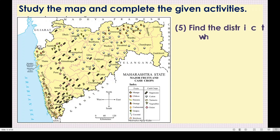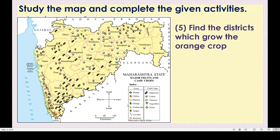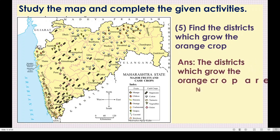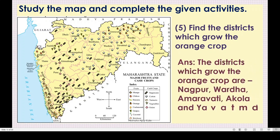Next question: Find the districts which grow the orange crop. Move to the index and see the orange symbol - it is shown as an orange-colored fruit. On the map, we can see orange in Nagpur, Amravati, Vardha, Yavatmal, and Akola. So the districts which grow orange crop are Nagpur, Vardha, Amravati, Akola, and Yavatmal.